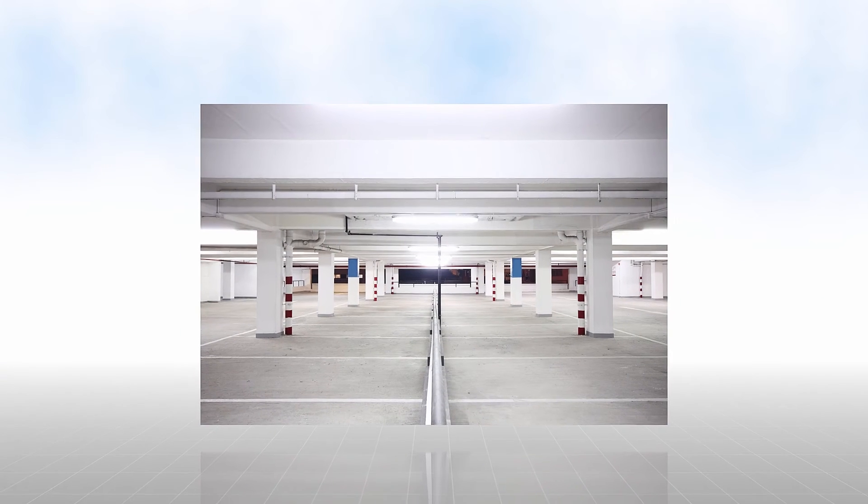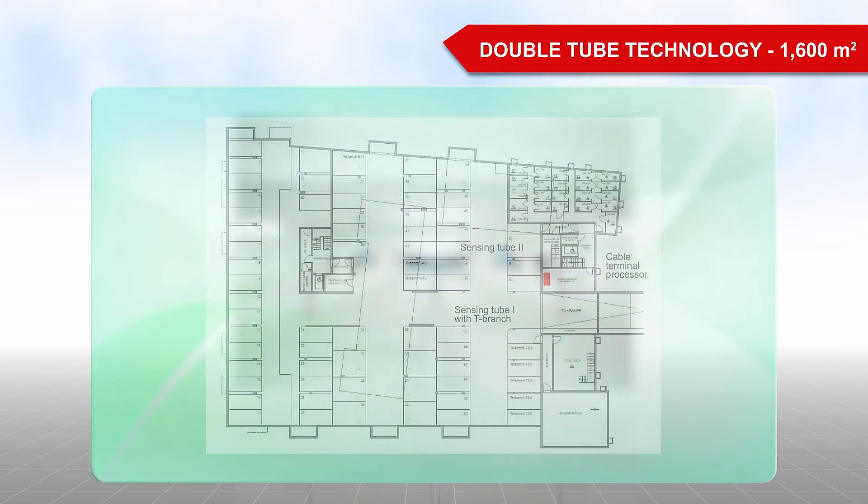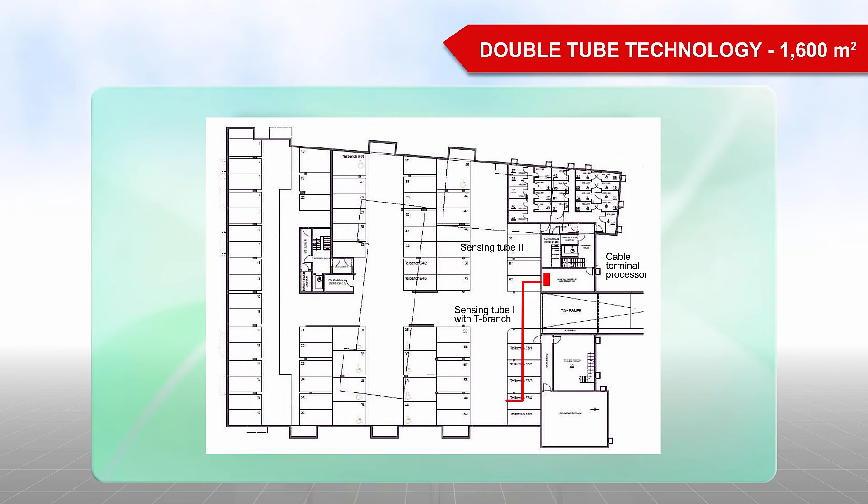Two sensing tubes can be connected to the ADW535, which is known as double tube technology. This means that an area of up to 1,600 square meters can be monitored with one cable terminal processor.